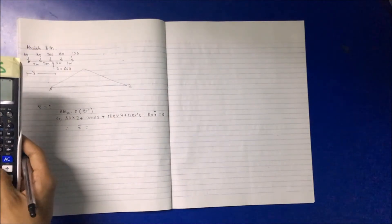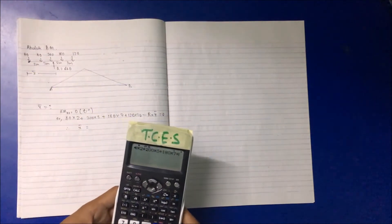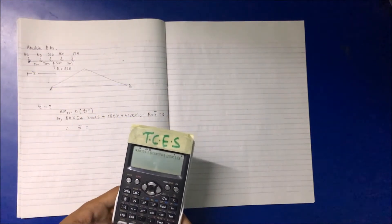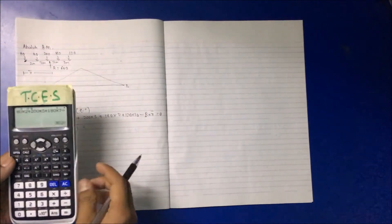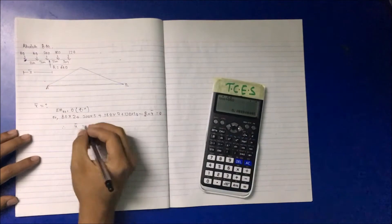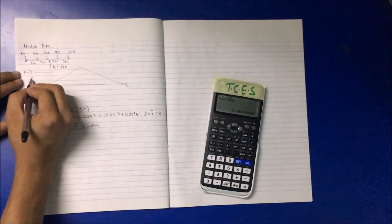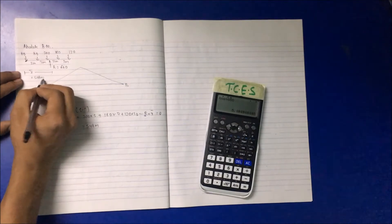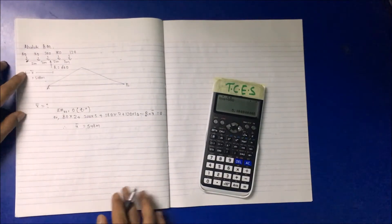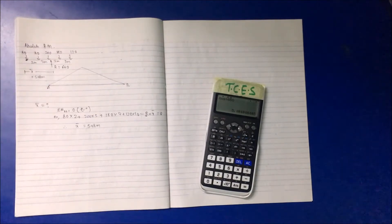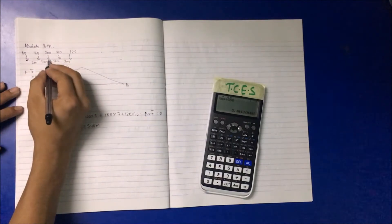So X̄ equals 80 into 2 plus 200 into 5 plus 180 into 7 plus 120 into 10, all divided by 660. This gives X̄ equal to 5.48 meters. The resultant load is acting at 5.48 meters from the reference point, which is 2 plus 3 meters.